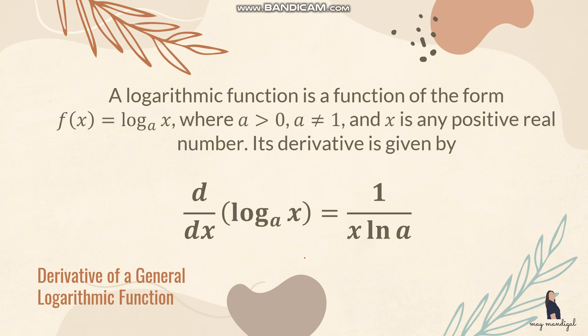For the general logarithmic function, the function takes the form f(x) = logarithm of x base a, where a is greater than 0 and a is not equal to 1, and x is any positive real number. Its derivative is given by 1 over x times ln of a. You use this formula when the function is a general logarithmic function and the argument is x.